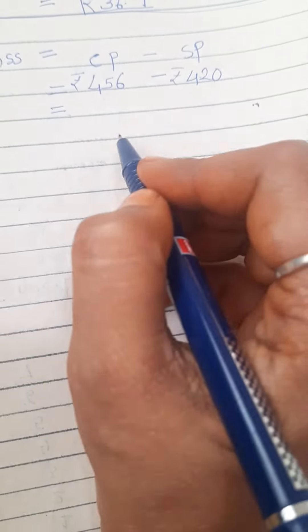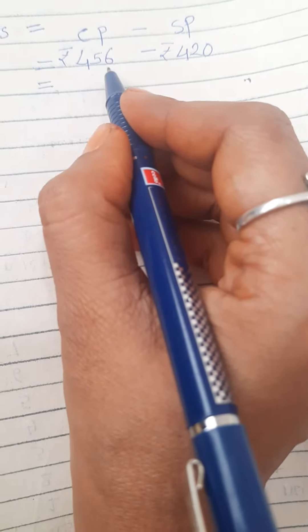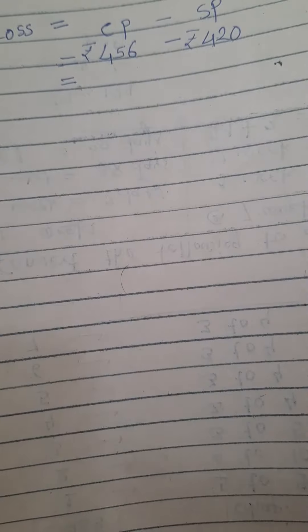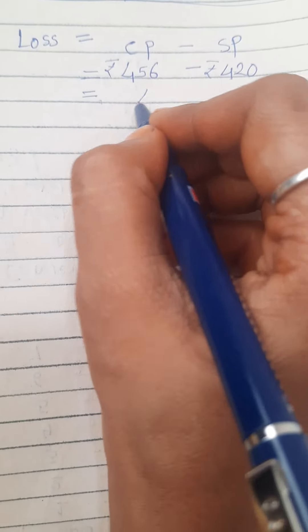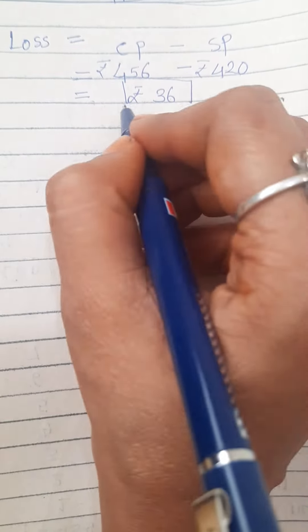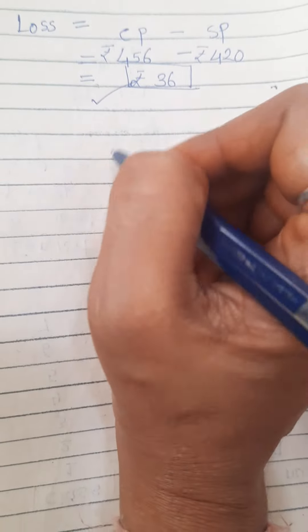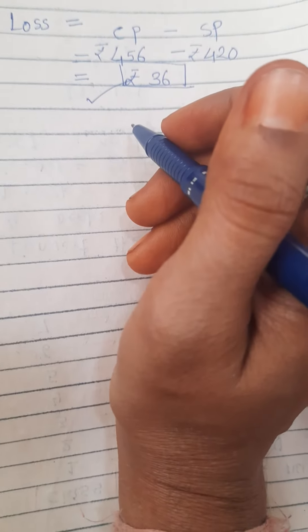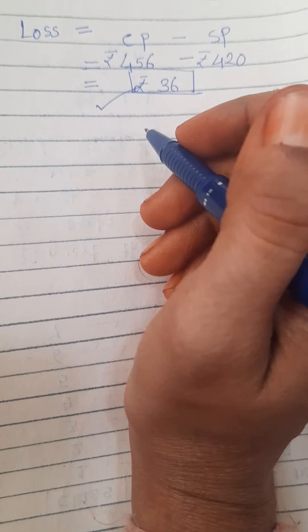Then just subtract that 456 minus 420 is equal to very good, rupees 36. That 36 is our answer, means we just found that loss. So using these structures, all structures, you have to solve that table in your page, page number 144.